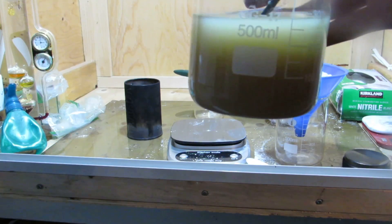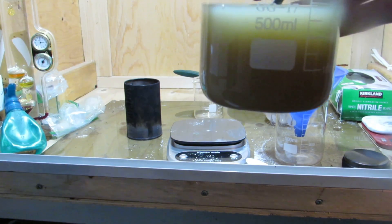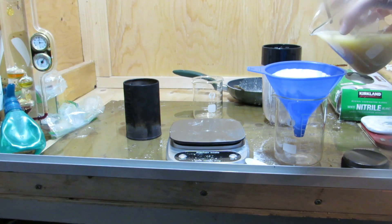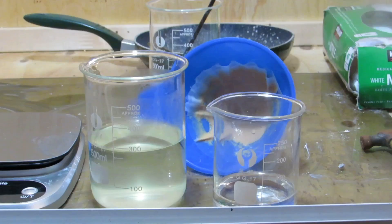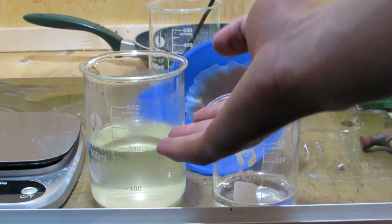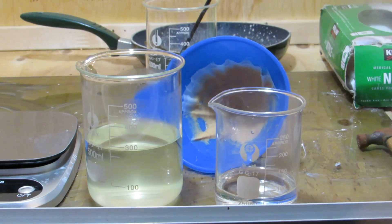The mixture was then filtered to remove insoluble impurities. The resulting sodium silicate solution was nice and clear. So next 75 milliliters of hydrochloric acid was added to the solution. This could be purchased as muriatic acid from hardware stores.